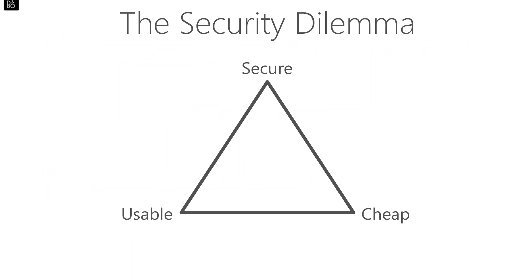If we have to explain security to management or customers, we can do it simply with this triangle. The idea is you can have two sides — you can't have all three. If they have a solution that is secure and cheap, it isn't going to be usable. If they want usable and cheap, it's probably not going to be secure. Speak to management and help them understand that security is a balancing act. Let them know: we need to pick two of these sides — tell us which two, and we can craft a solution for that.